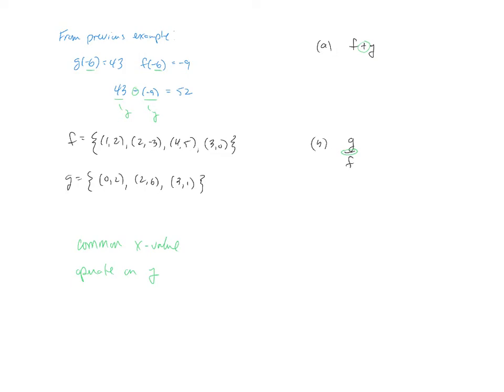If I look at example a function f plus g these two functions I'm going to look for common x values. So the x coordinate of 2 occurs in both f and g and so as a point we would have an x coordinate of 2 and we would then operate on the y's. So negative 3 plus 6. Then we'll continue searching to see if there are any more common x values.